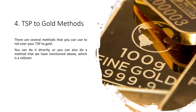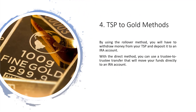4. TSP to gold methods. There are several methods that you can use to rollover your TSP to gold. You can do it directly, or you can also do a rollover, which is the method mentioned above. By using the rollover method, you will have to withdraw money from your TSP and deposit it to an IRA account. With the direct method, you can use a trustee-to-trustee transfer that will move your funds directly to an IRA account.